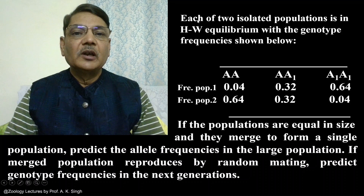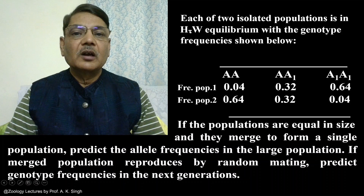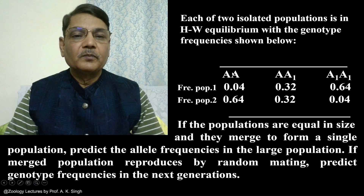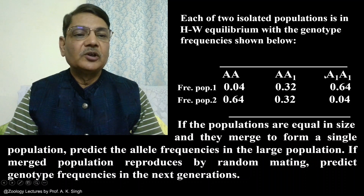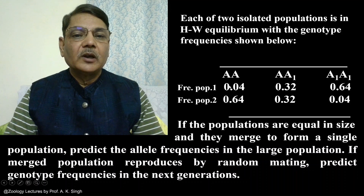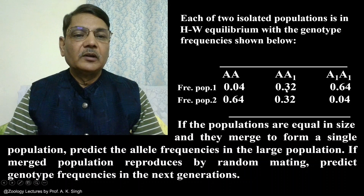In this question, each of two isolated populations are in Hardy-Weinberg equilibrium with the genotype frequencies shown below. These are two populations, population 1 and population 2, and their genotype frequency for a specific gene locus is given. Genotype AA has a frequency of 4%, that is 0.04. Heterozygotes Aa have frequency 0.32, and aa has frequency 0.64.